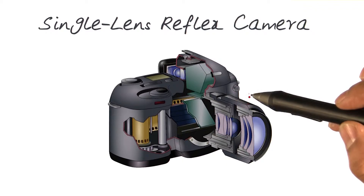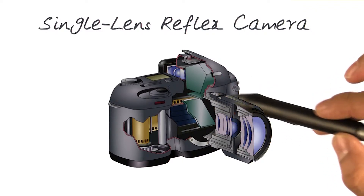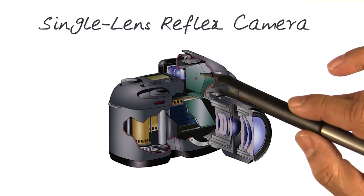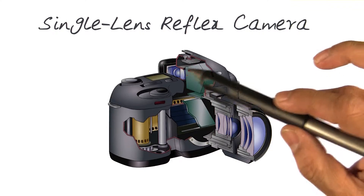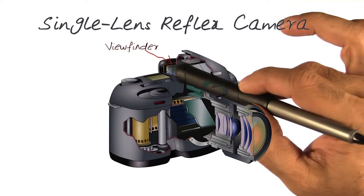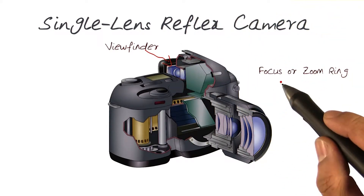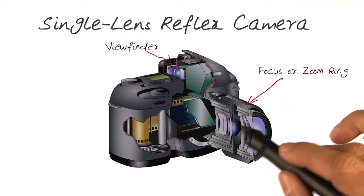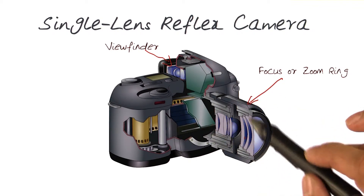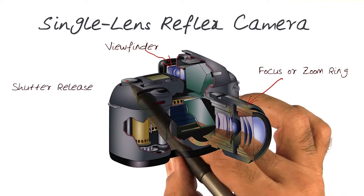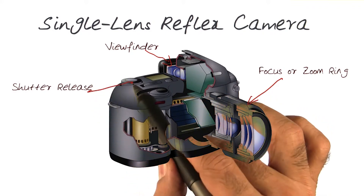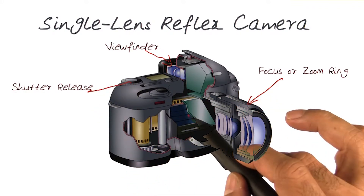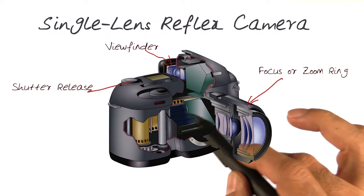Here I'm showing you a cutout of the same or a similar camera, where you can see all of the details we looked at. This is where the viewfinder was. The focus or zoom ring in the lens were right here. The shutter release button is right there.